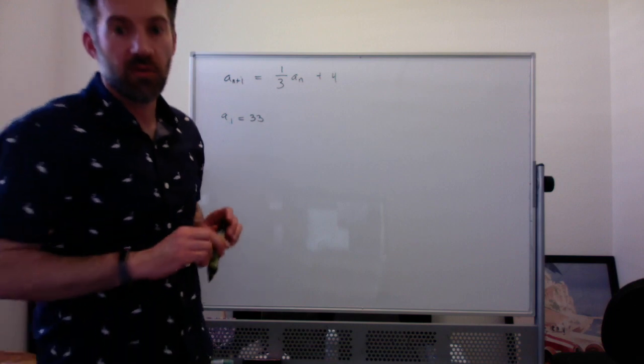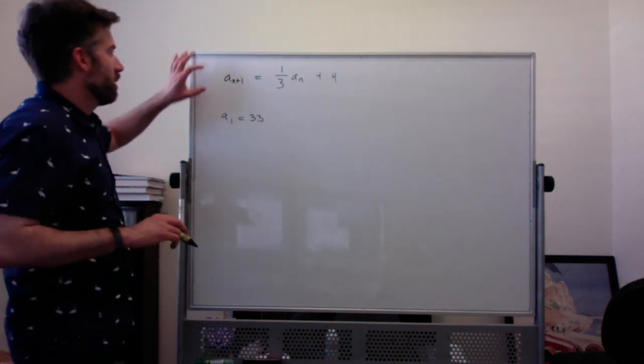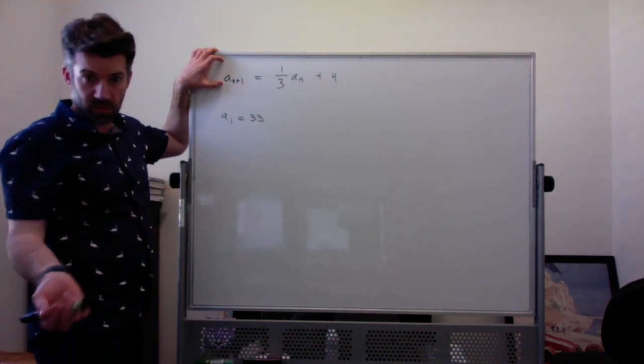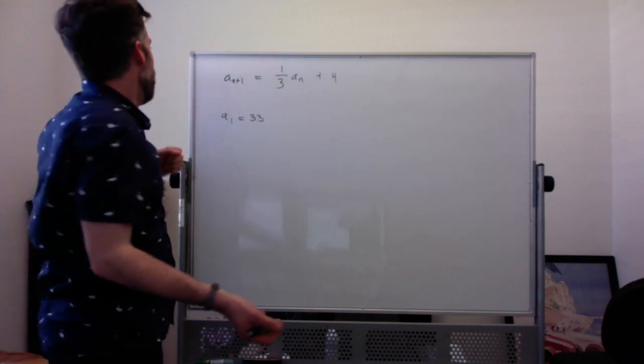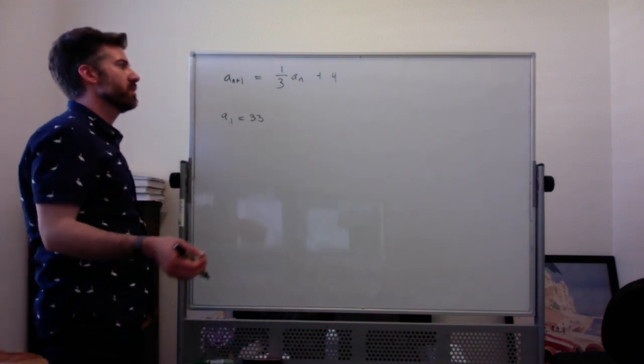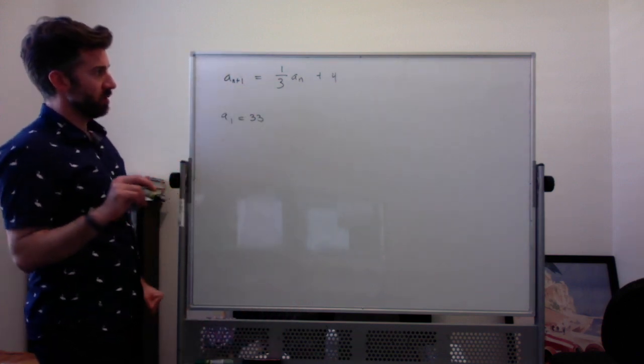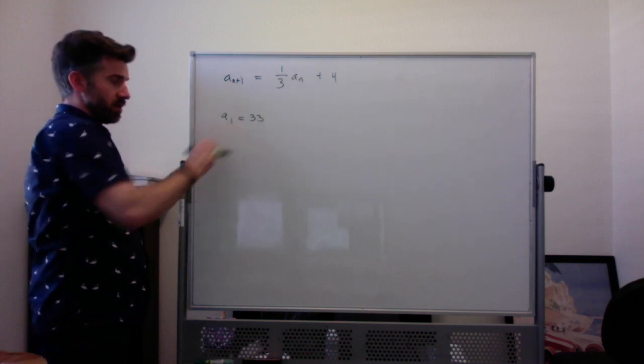To find the limit of a sequence. So here's our recursive sequence, or our difference equation is another way you say that. A sub n plus 1 equals 1 third times A sub n plus 4. And A sub 1 equals 33.